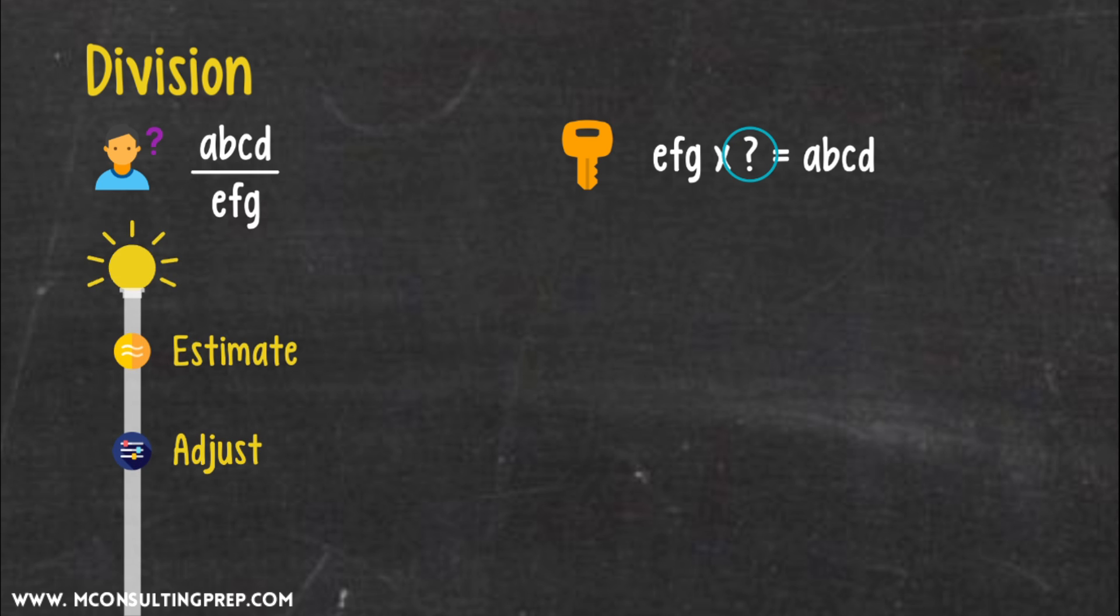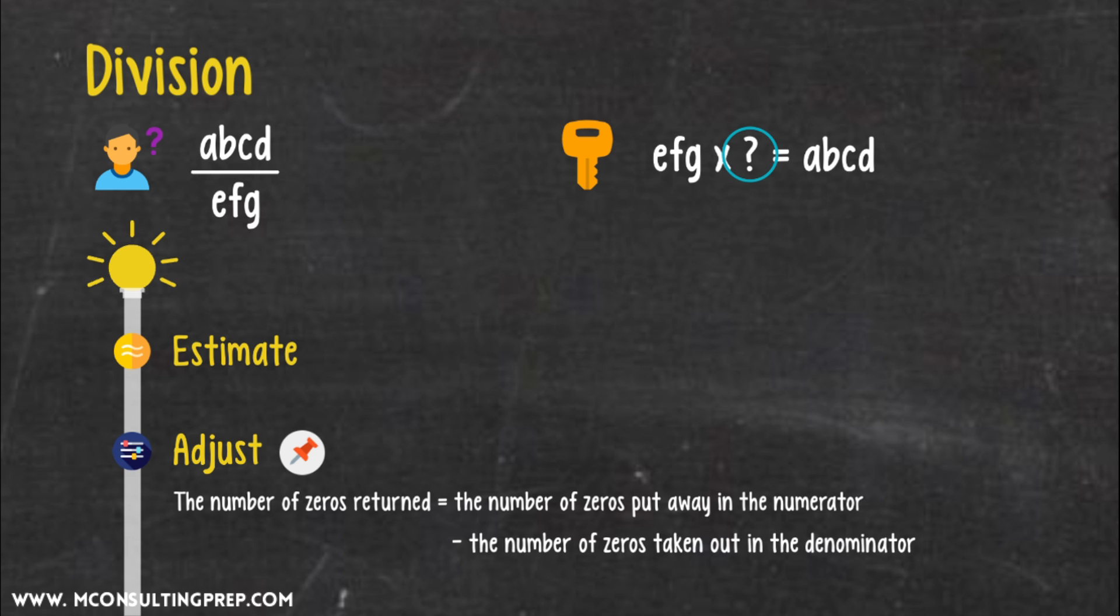Believe me, it's not hard at all. Suppose we need to calculate ABCD divided by EFG. The general method is to find how much EFG needs to be multiplied to equal ABCD. Then we follow a quite similar process of estimation and adjustment. The subtle difference between multiplication and division lies in returning zeros in the last step. The number of zeros returned equals the number of zeros put away in the numerator minus the number of zeros taken out in the denominator.